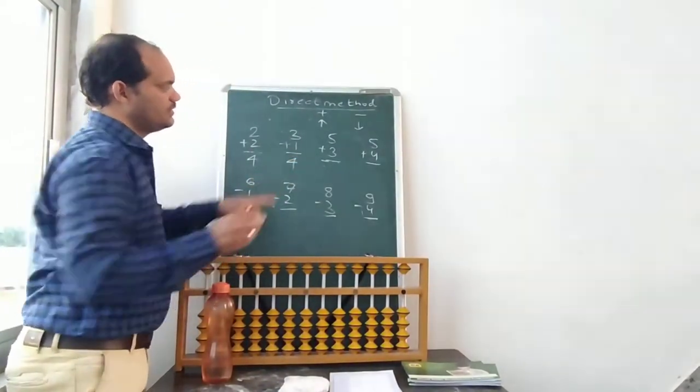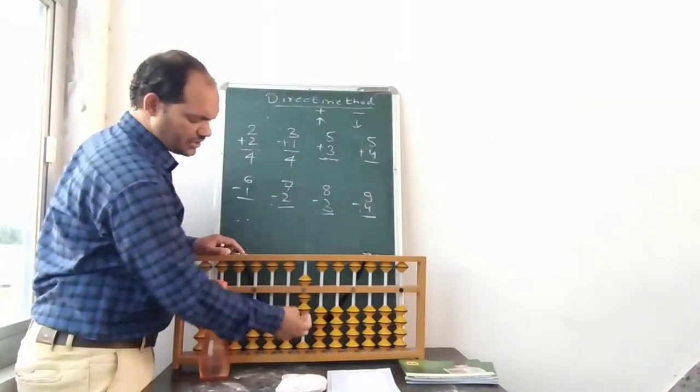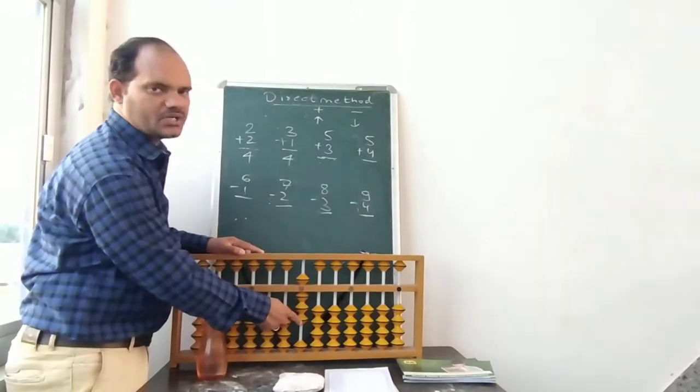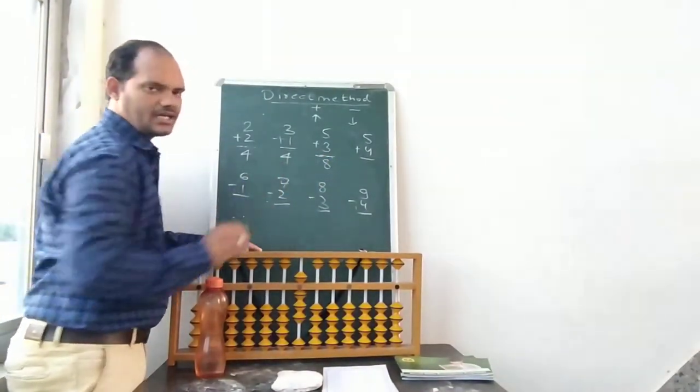So we are writing 4. Now 5 plus 3. So 5 is from up and 1, 2, 3, 3 are from down. So now we can see 5 from up and 3 are from down. This answer is 8. So 5 plus 3 answer is 8.